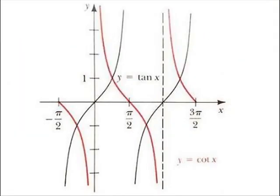This is the graph of the cotangent function, and it's also defined in terms of a ratio. It displays asymptotic behavior at the zeros of the denominator. Cotangent of x equals cosine of x over sine of x. The vertical asymptotes occur at 0, pi, and 2 pi. We can observe that the graph is decreasing throughout the interval 0 to pi and has a period of pi. Also notice that the function is odd, which means cotangent of negative x equals negative cotangent of x.